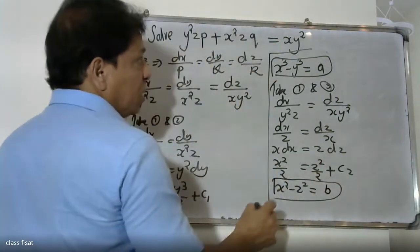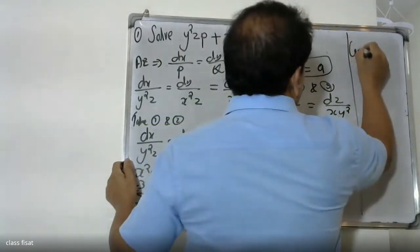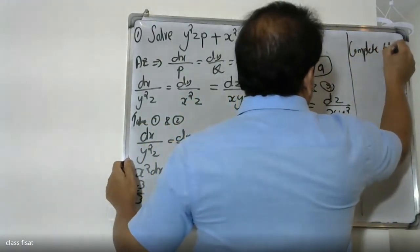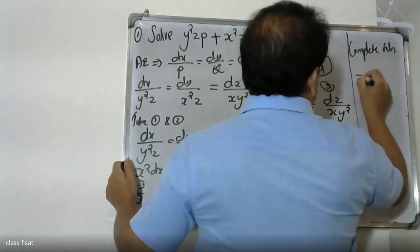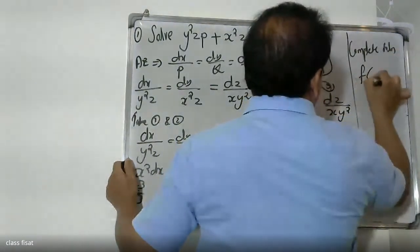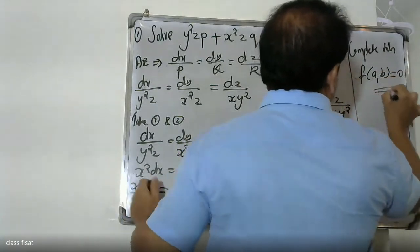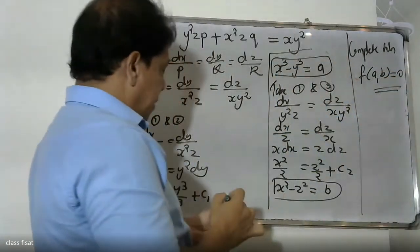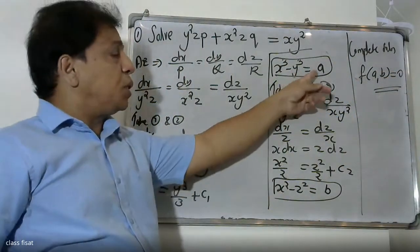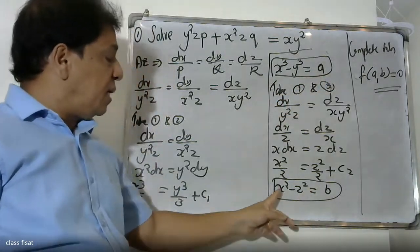Therefore the complete solution is F of (a, b) is equal to 0, where a is x-cubed minus y-cubed.